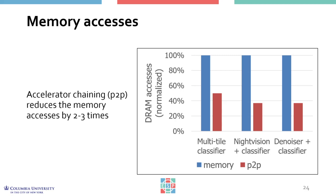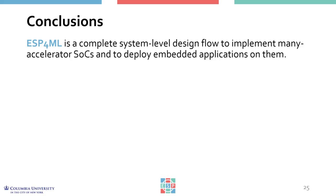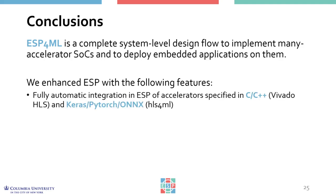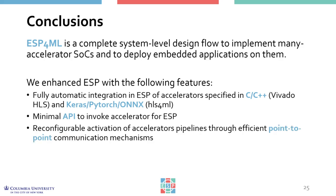ESP4ML is a complete system-level design flow to implement SoCs for embedded applications. We realized ESP4ML by building on the prior efforts of two distinct open-source projects, ESP and HLS4ML. We augmented ESP with new accelerator design flows to allow for the first time the integration of HLS4ML accelerators into a complete SoC, developed a minimal API to invoke and manage multiple accelerators, and enabled the reconfigurable activation of accelerator pipelines through an efficient point-to-point communication mechanism. We demonstrated our work with FPGA implementations of various SoC instances running computer vision applications.